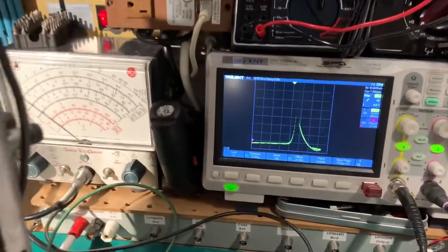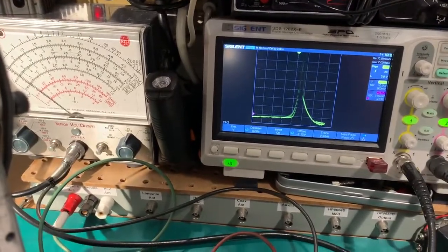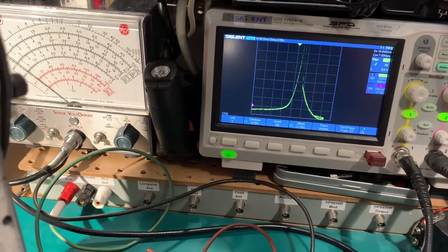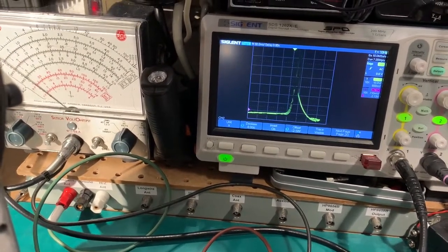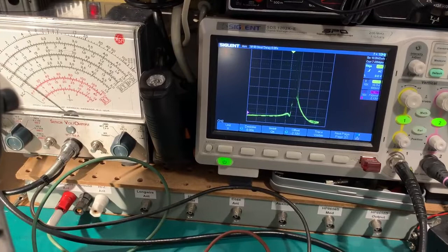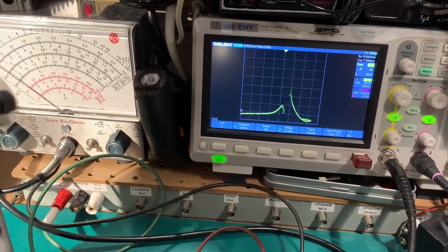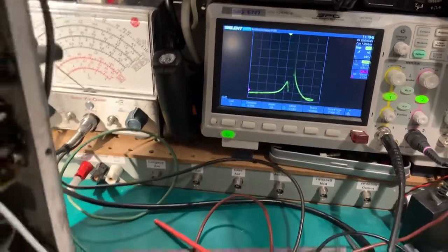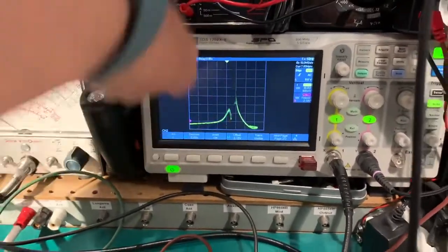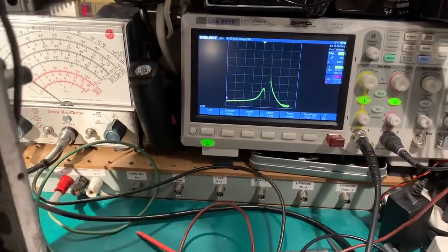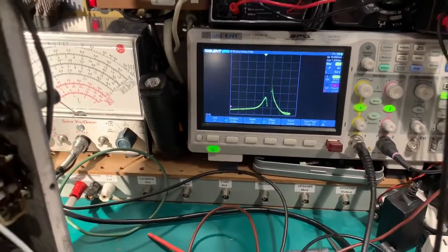And if I adjust the crystal phasing control it steepens the peak. You've got one way and you take it the other way and actually start to get a little bit of a dip on the leading edge there. You can see there's a little notch appearing. So that's very useful to tune out a heterodyne on a signal that you're trying to receive.